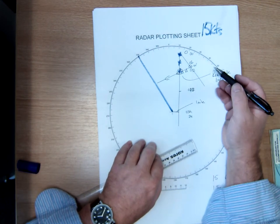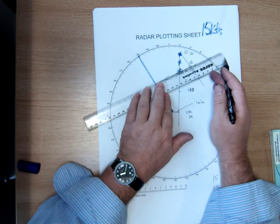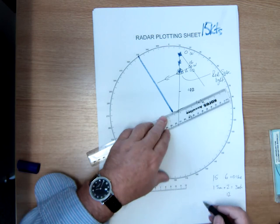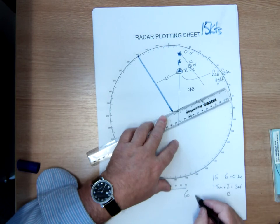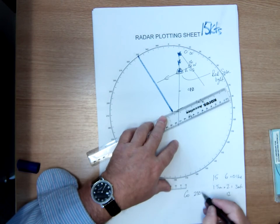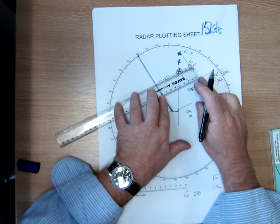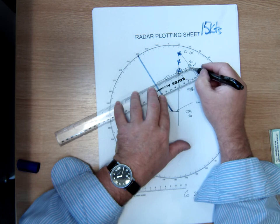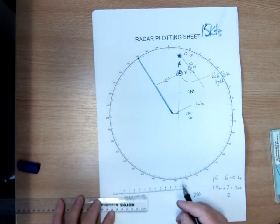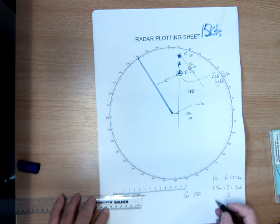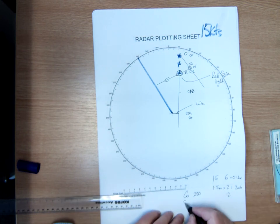So what I need to do is what's her course? Well, if I come down, run parallel, her course is 250. Is 250. And her speed?